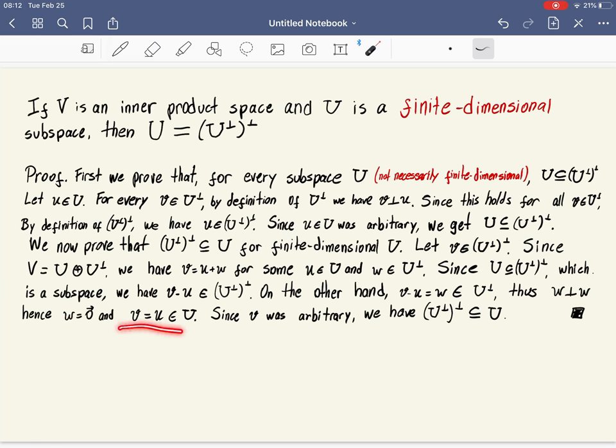If w is zero, v equals u, but u is in U. And that's what we have to prove. We have to prove that v is in U. So since v was arbitrary, we can conclude that U⊥⊥ is a subspace of U.